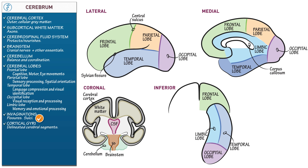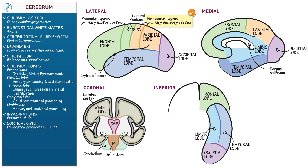Cortical gyri are delineated segments of cerebrum — anatomically defined areas with discrete functions. The precentral gyrus, which is the primary motor cortex (also known as primary motor area), lies anterior to the central sulcus within the frontal lobe and initiates movement. The postcentral gyrus, which is the primary sensory cortex (or primary sensory area), lies posterior to the central sulcus within the parietal lobe and is the initial cortical reception site for sensation.